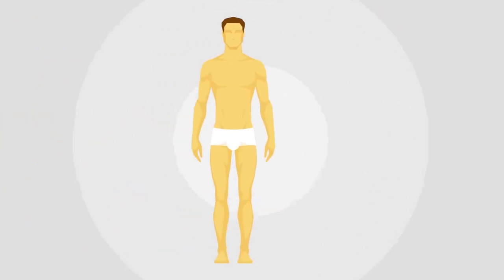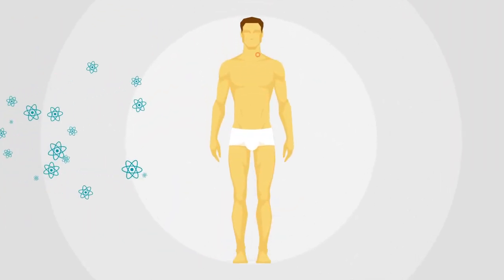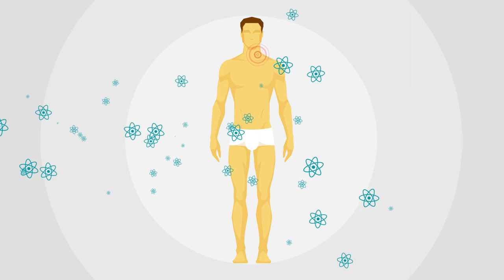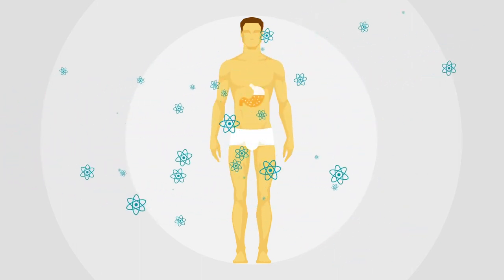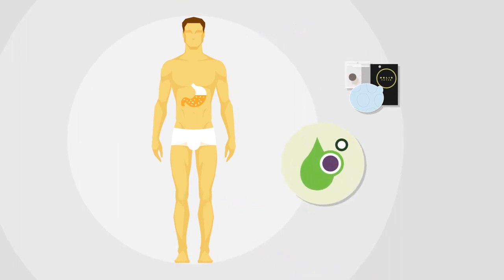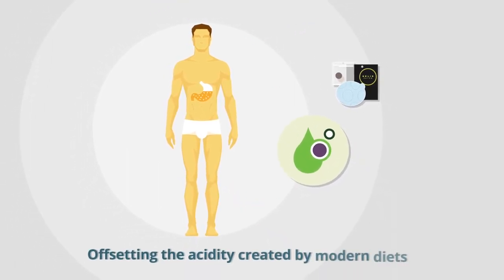HelioPatch delivers a wallop of naked electrons that neutralizes the free radicals and reduce inflammation and pain. As an added benefit, HelioPatch creates alkalinity in the body, offsetting the acidity created by modern diets.